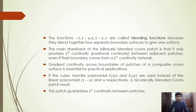Instead of using linear functions 1−U, U, and 1−V, V, we use F₁(x) and F₂(x), called cubic Hermite polynomials, to obtain a bicubically blended Coons surface. This patch can guarantee C1 continuity.